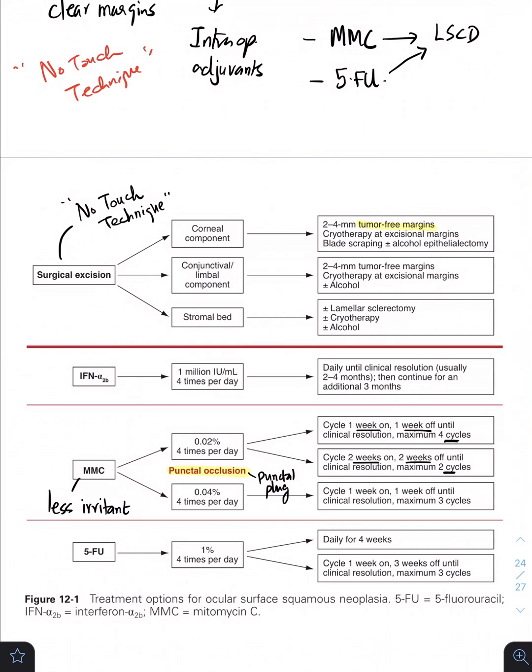As far as the topical chemotherapy is concerned, interferon alpha-2 beta is more preferred because it is safe, you can use it for longer periods versus MMC and 5-FU. Both have to be monitored very closely. MMC is less irritant whereas 5-fluorouracil is going to be more irritant. Note that. And always whenever you instill MMC and 5-fluorouracil, use punctal occlusion. Sometimes people even put in punctal plugs to prevent systemic absorption as well as to prevent punctal stenosis in these patients.